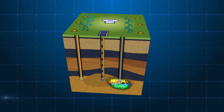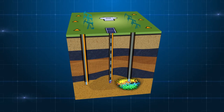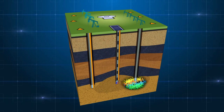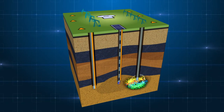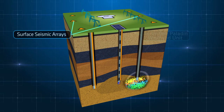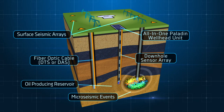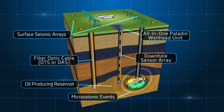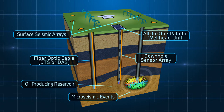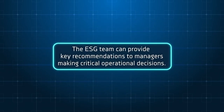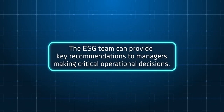Operations attempting to rely on a single technology leave themselves vulnerable to unanticipated events. When two or more technologies are combined, operators have better ability to ensure safety, maintain regulatory compliance, and maximize ROI. The ESG team can provide key recommendations to managers making critical operational decisions.